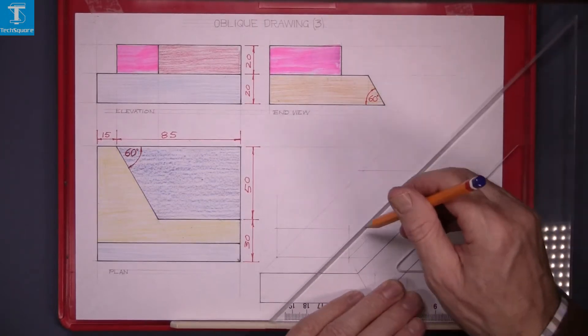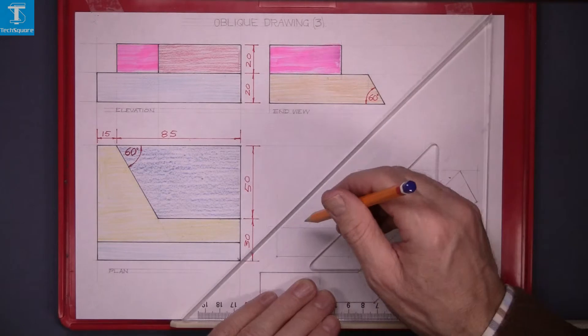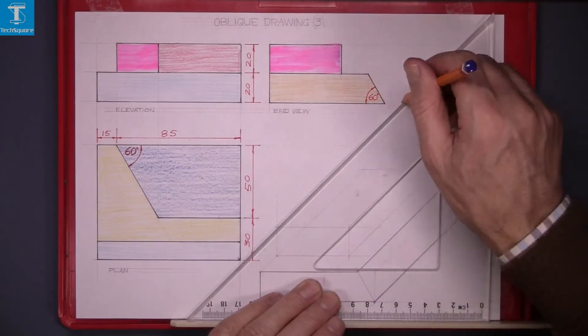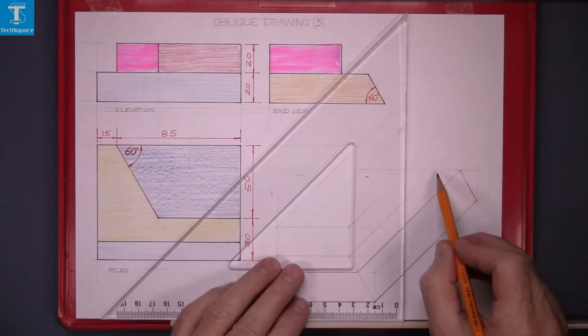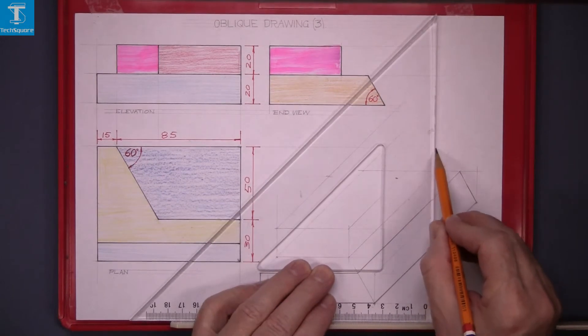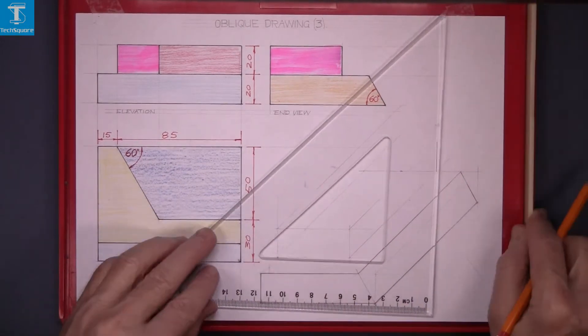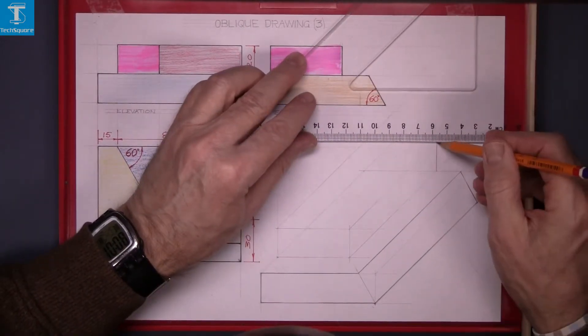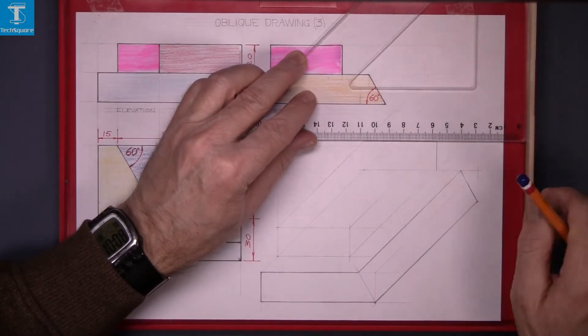Draw back at 45 degrees to get the far end of the piece, and then from that point draw vertically and horizontally across. Get you that piece drawn in lightly.